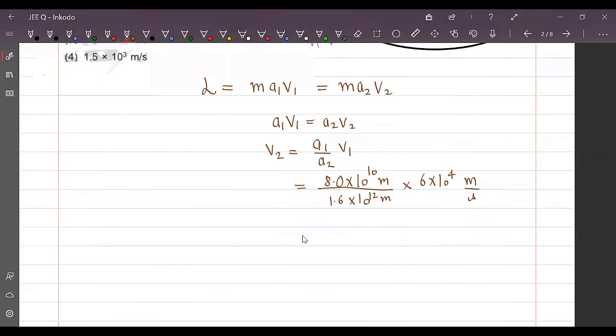Now let us solve this. This will give me a 100. This will give me a 0.2. So that will be 6 into 10 raised to 2, 60,000 by 20. That is 3000 meter per second. So 3.0 into 10 raised to 3 meter per second.